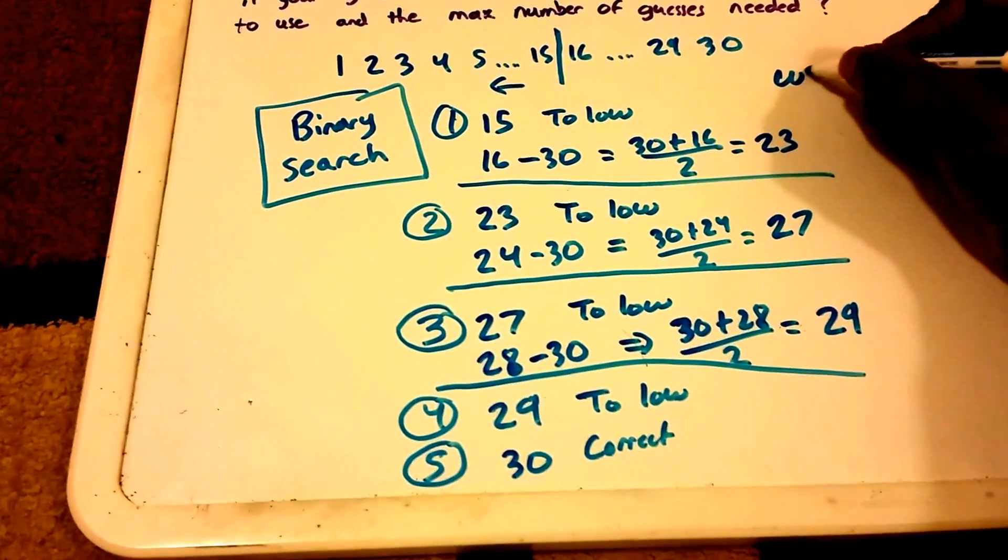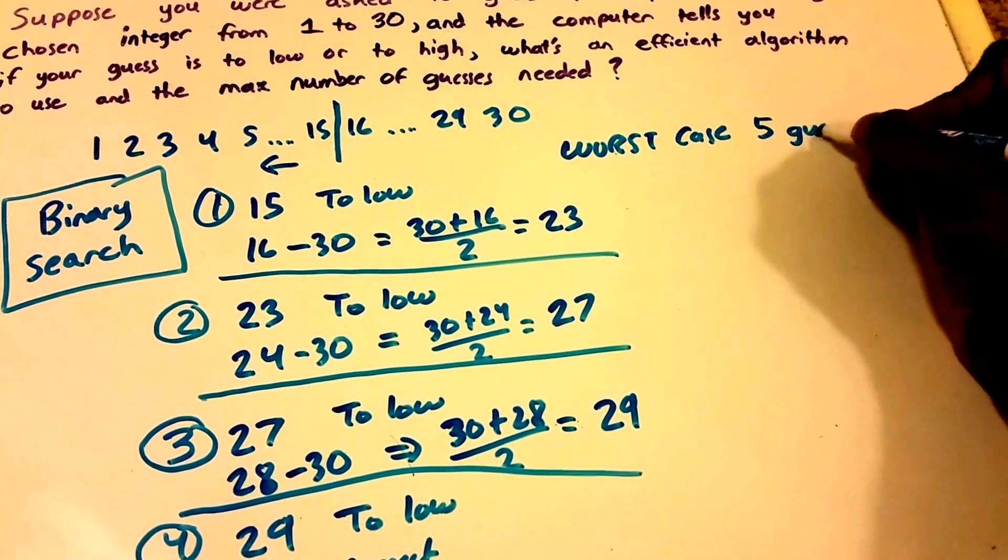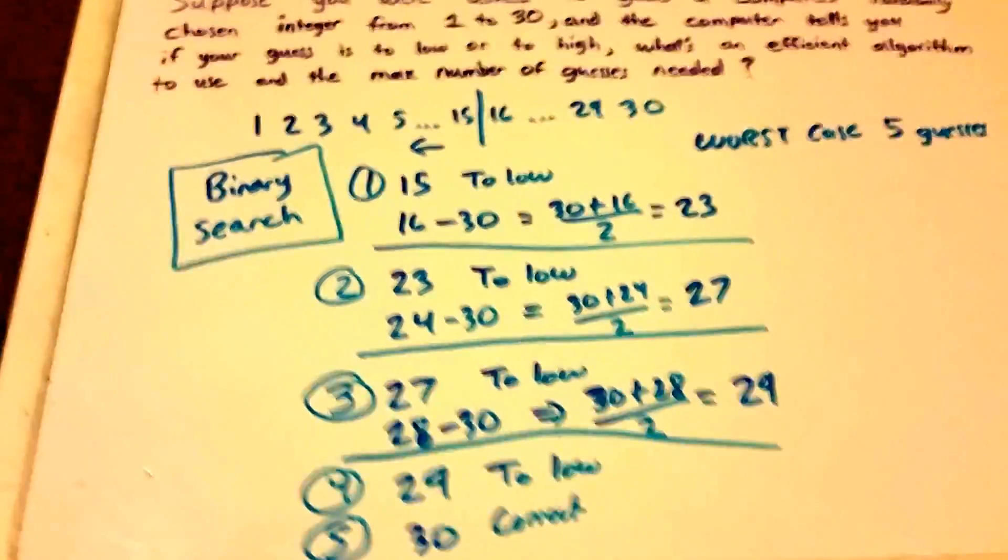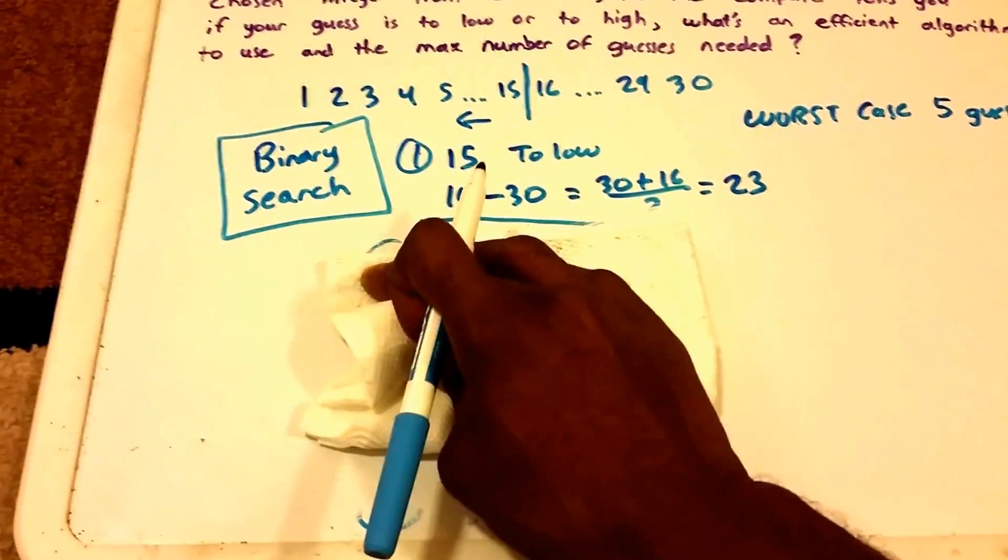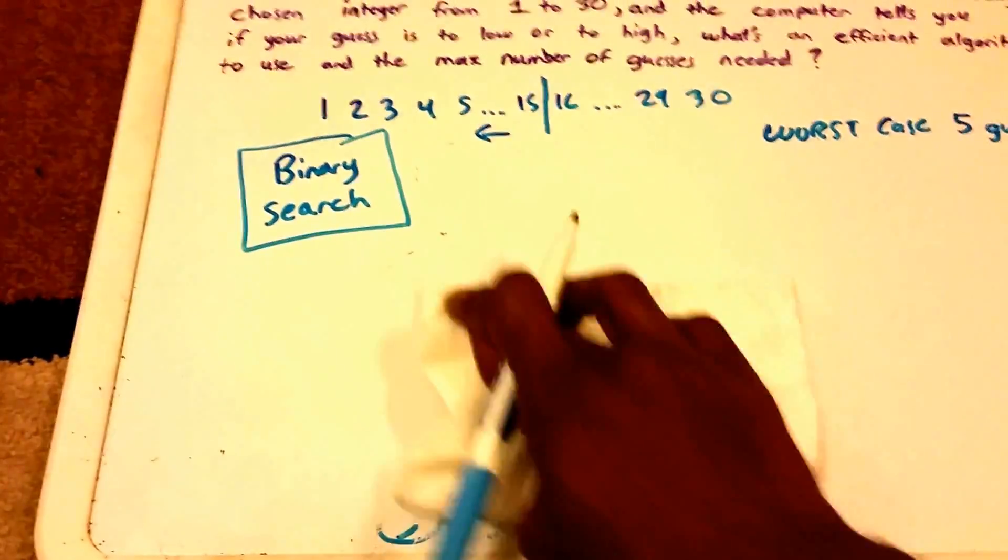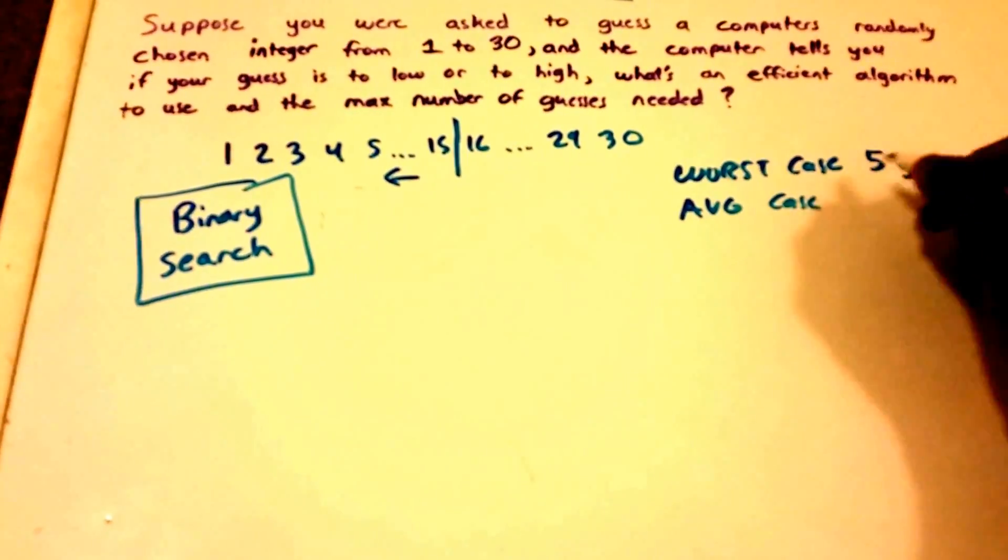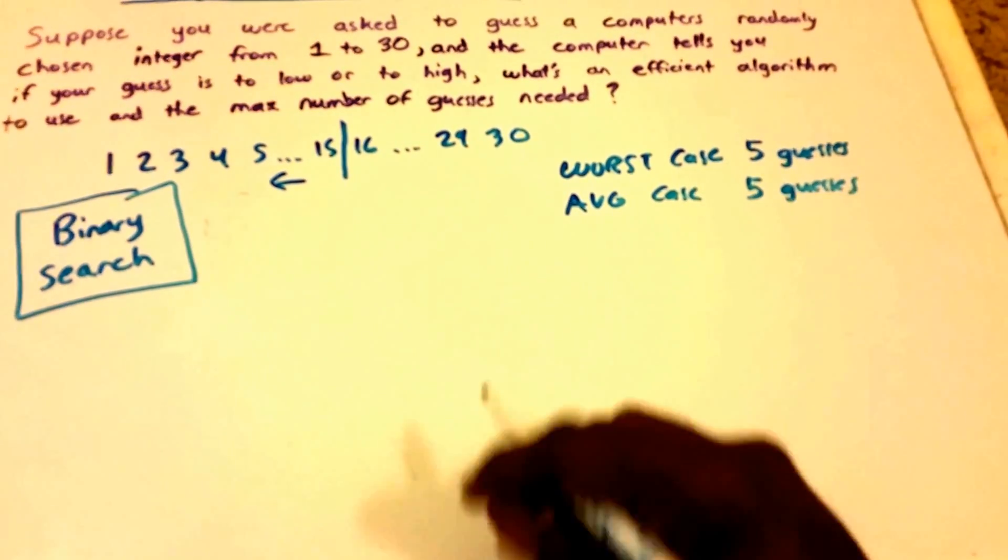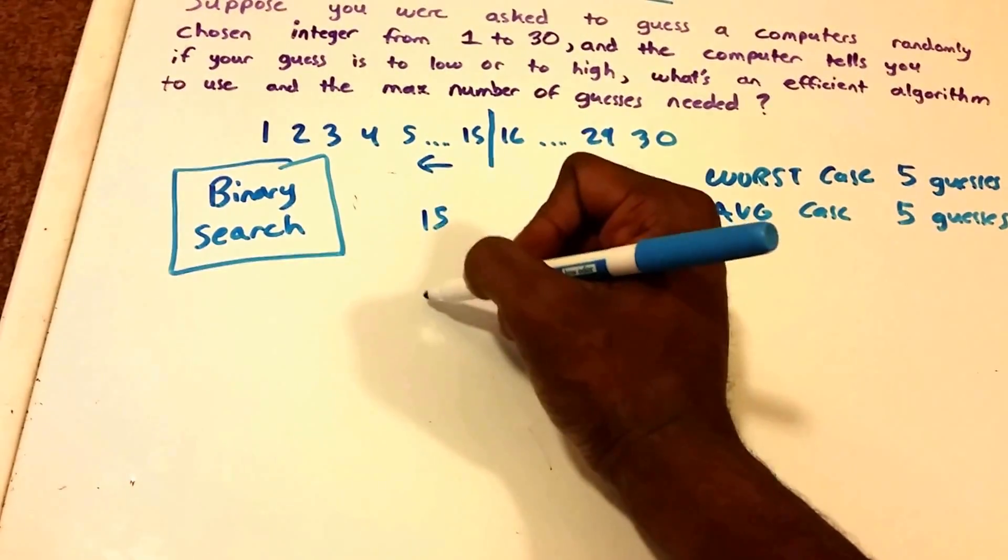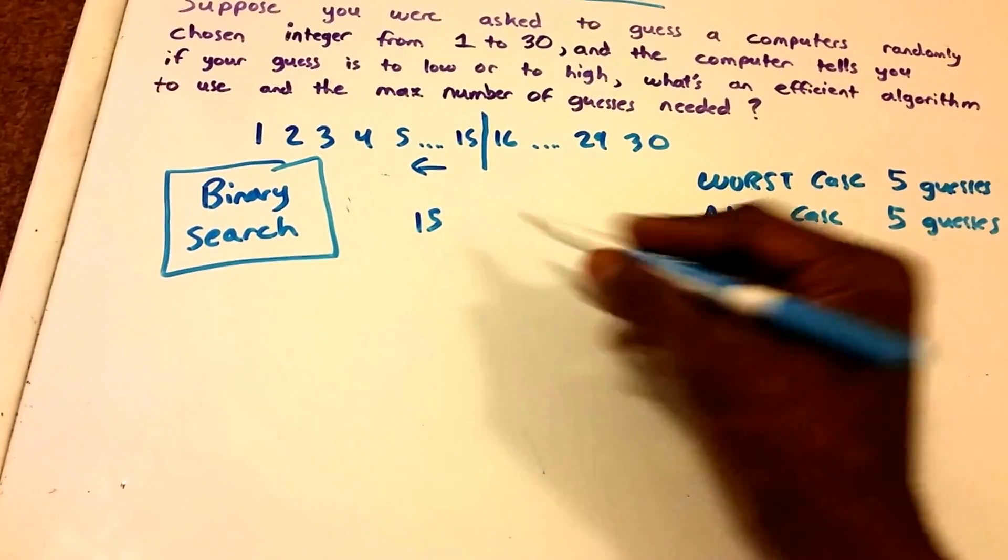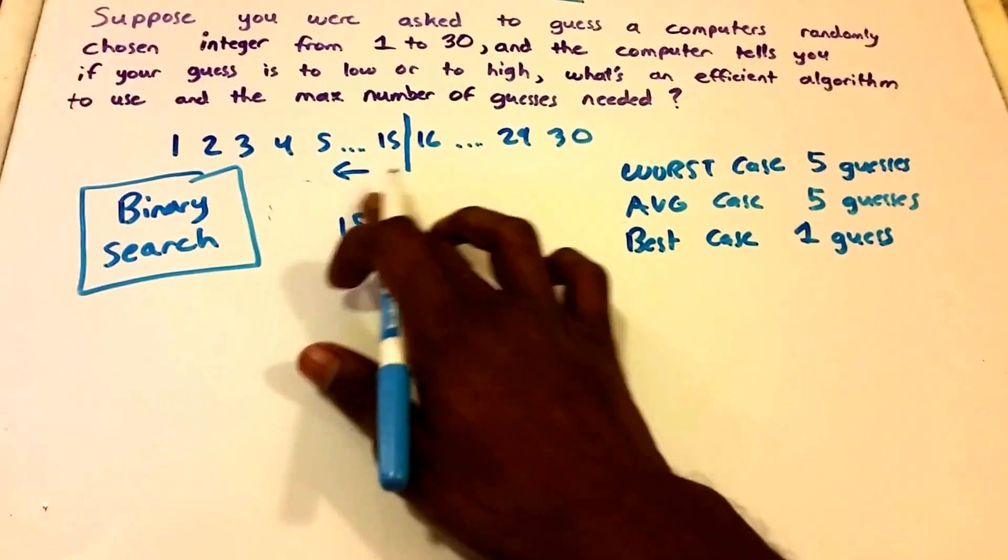And that was the worst case. So up here I'm going to put worst case was 5 guesses. Let me make some room here. And you can see how efficient that was. It didn't take 30 guesses, it only took 5. And believe it or not, on average, yeah, on the average case, it'd take about 5 guesses. And then best case is that the number chosen, the number 15 in the middle, is the correct number that the computer randomly chose. And in that case, the best case is 1 guess, okay?